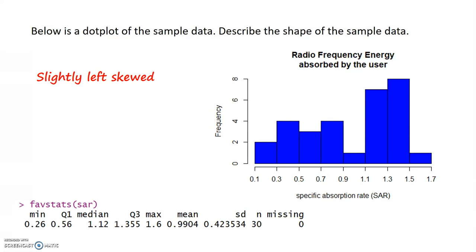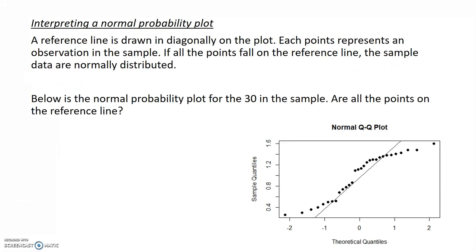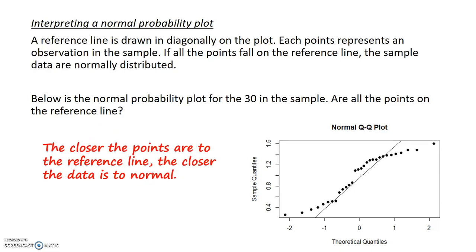Therefore, we believe that the sampling distribution will be normal. Another graph I could use to assess normality is called a normal probability plot. In R, it's called a normal QQ plot. The dots represent the data, and the closer the points are to the reference line, the closer the data is to normal. I can see that not many of my points are on the line, and there's a bit of an S shape occurring. This indicates I have a slightly skewed graph, which we could see in the histogram.